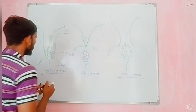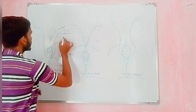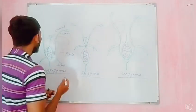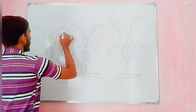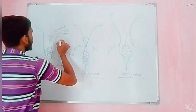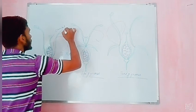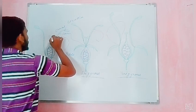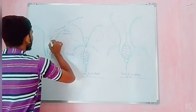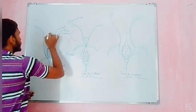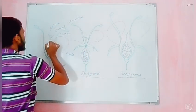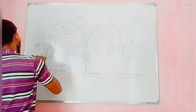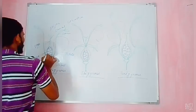In hypogynous condition, this is the sepal, this is petals, this is stamens, and this is the carpel. Stamens are the male reproductive part of the flower and consist of three parts: anther, the long tube filament, and the place where anther and filament are joined is called the connective. The carpel is the female reproductive part of the flower and consists of stigma, style, and ovary. Inside the ovary, ovules are present.